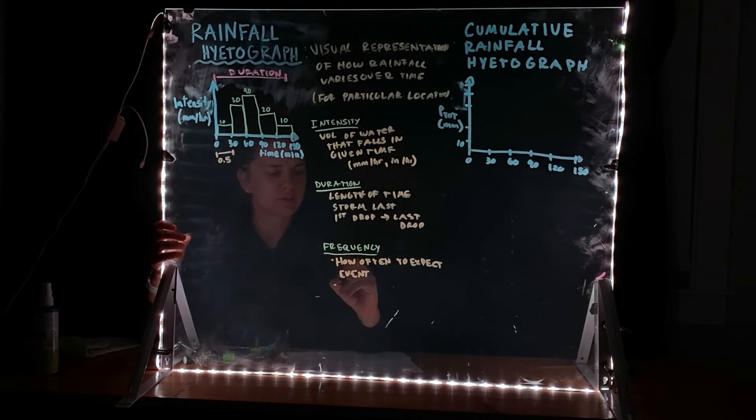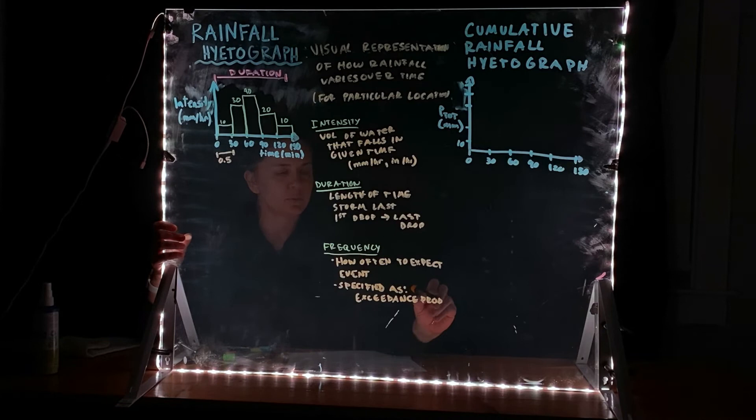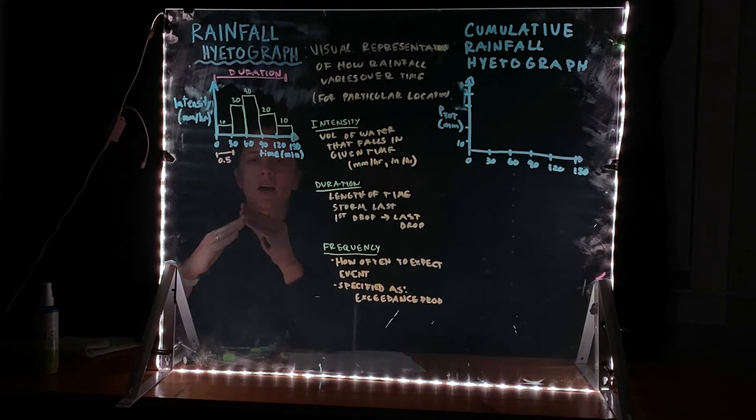Frequencies are specified in water resources for both rainfall events and we'll see in a few weeks as stream flows as well. They are specified as exceedance probabilities.